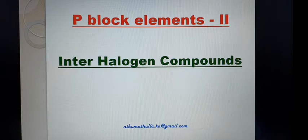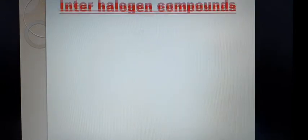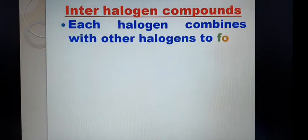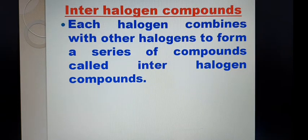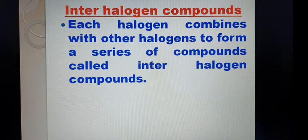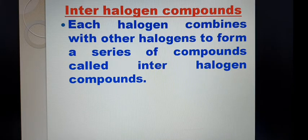What are interhalogen compounds? Each halogen combines with other halogens to form a series of compounds called interhalogen compounds. Interhalogen compounds are the compounds of halogen only.